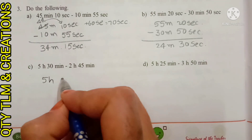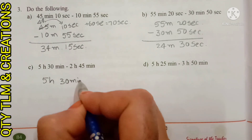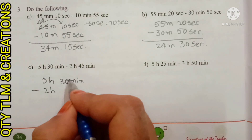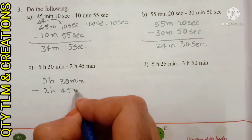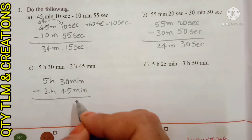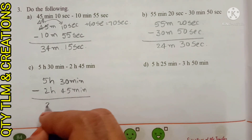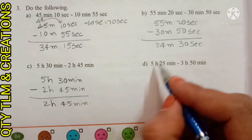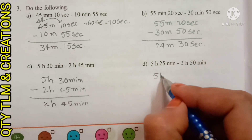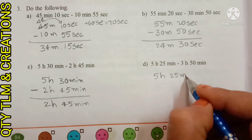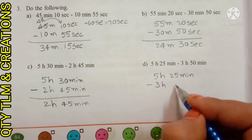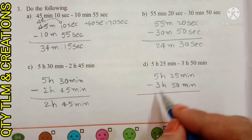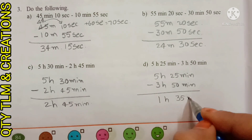C) 5 hours 30 minutes minus 2 hours 45 minutes. D) 5 hours 25 minutes minus 3 hours 50 minutes. We will get 1 hour 35 minutes.